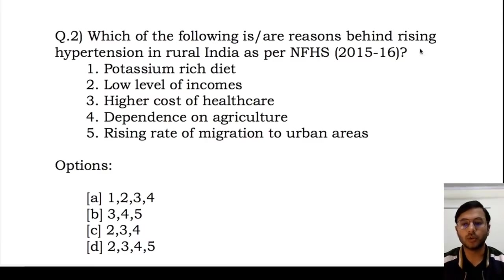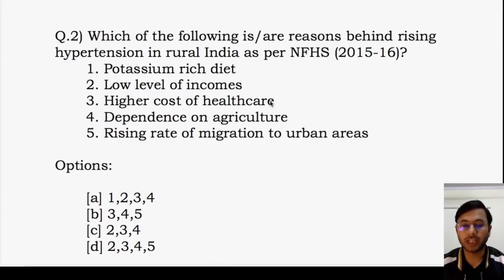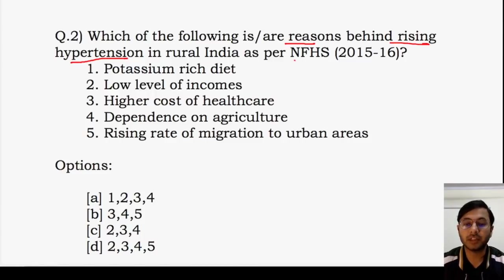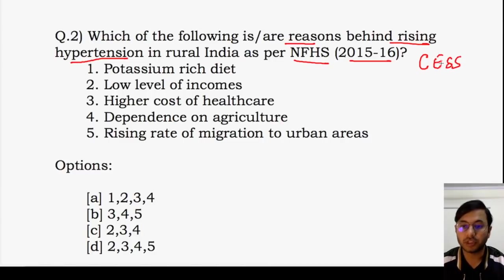Second question. This is a direct question without any paragraph. The question is: which of the following are reasons behind rising hypertension in rural India as per National Family Health Survey 2015-16? National Family Health Survey data is also available in Socioeconomic Caste Census and the Census. The Census 2011, SECC, NFHS, and recent updates on migration are all available in one document in ESI. Cover it immediately because this question has been picked from there.